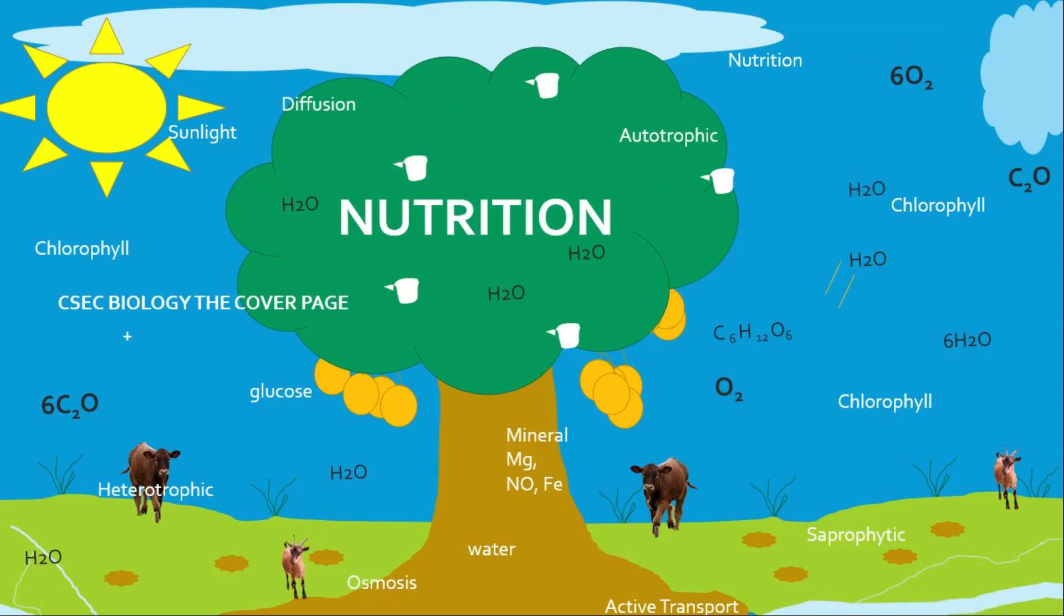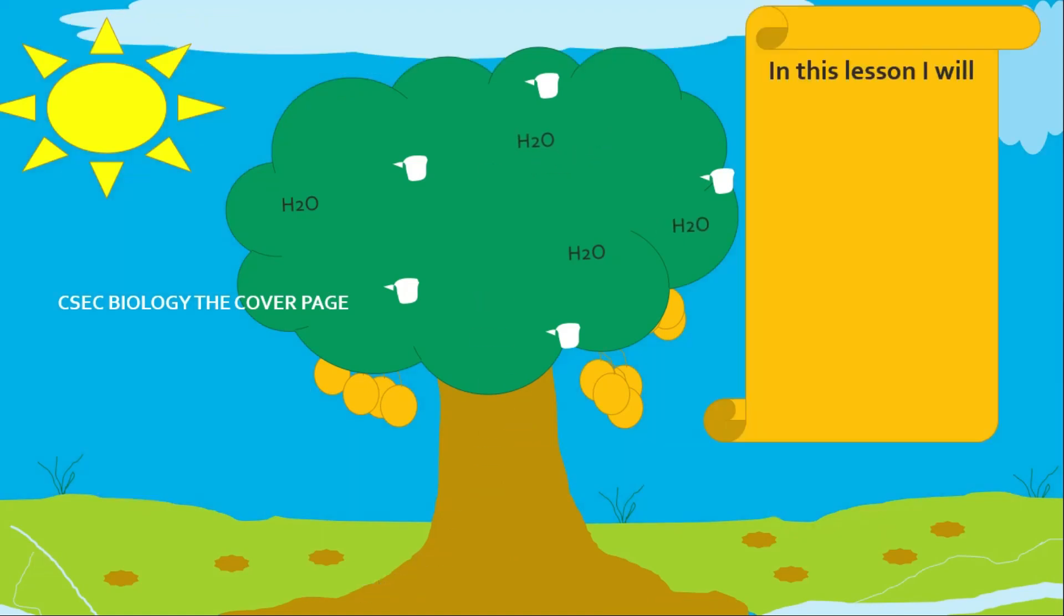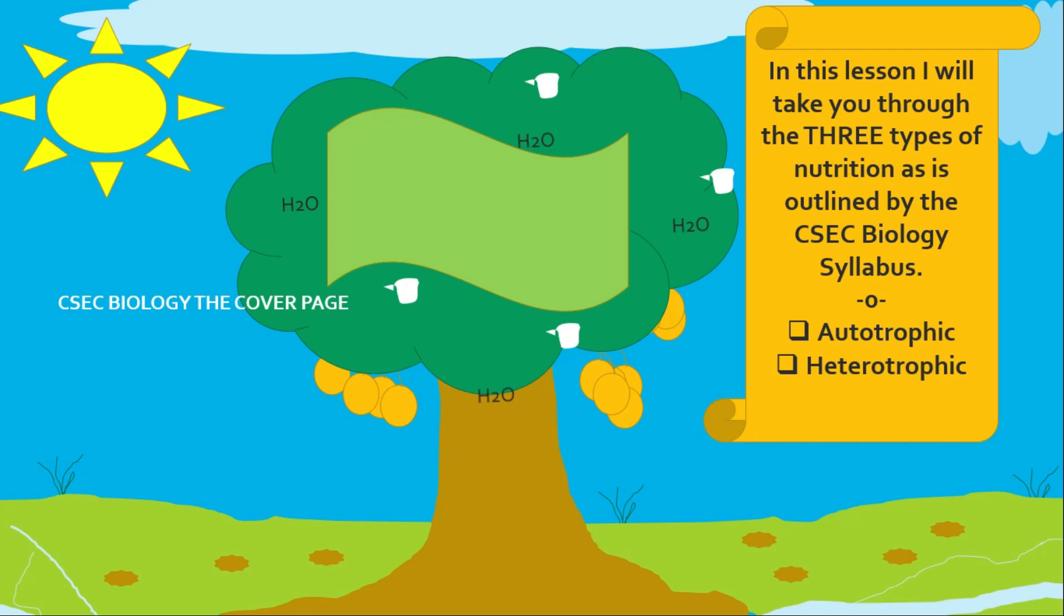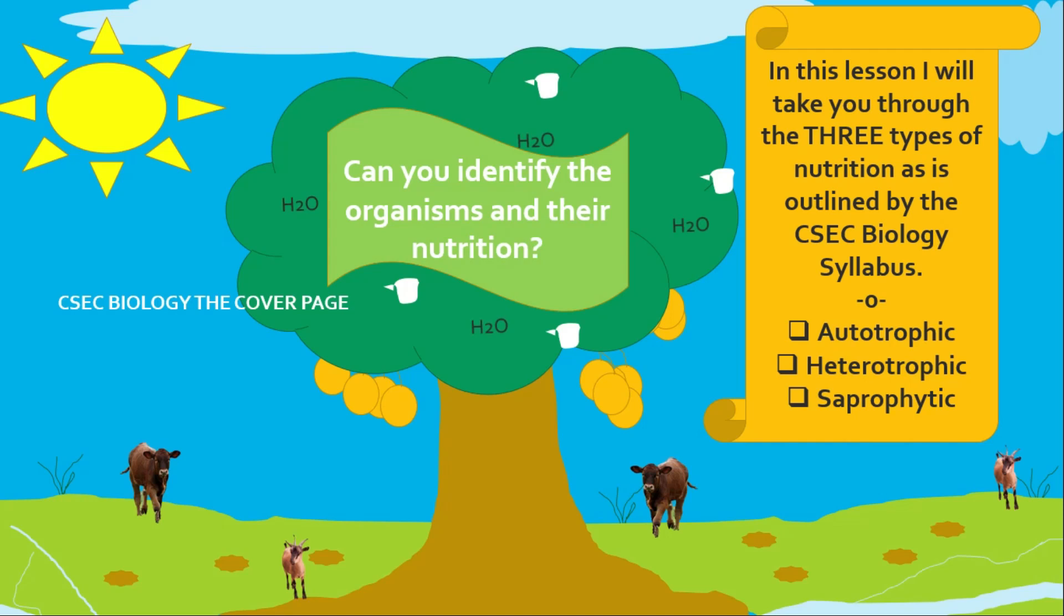We'll use the time to unscramble nutrition using our new animated series. In this lesson, I will take you through the three types of nutrition as outlined by the CSEC Biology syllabus: autotrophic, heterotrophic, and saprophytic. Can you identify the organisms and their nutrition?